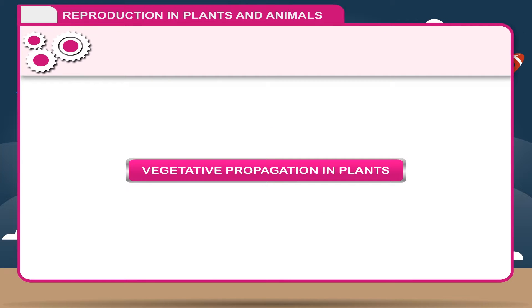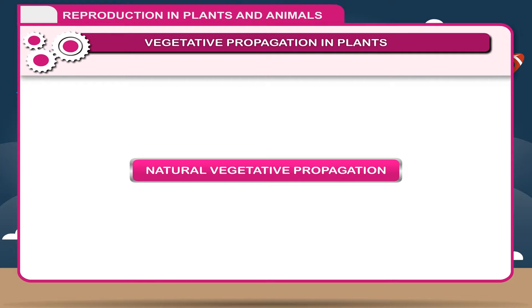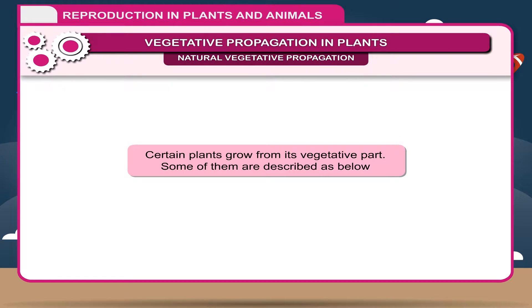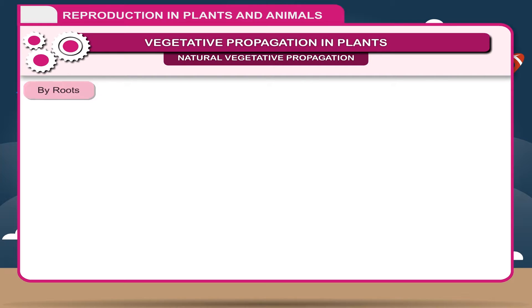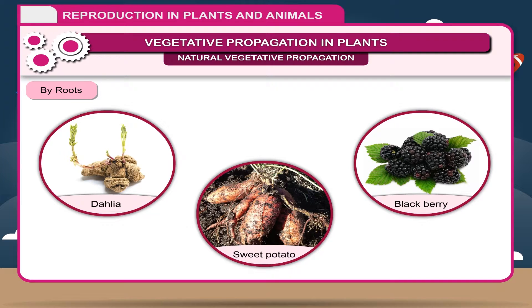Vegetative propagation in plants. In general, plants can be produced by vegetative propagation through several methods. Natural vegetative propagation: certain plants grow from their vegetative parts. By roots: in general, roots do not have the capacity for regeneration, but dahlia, sweet potato, blackberry, etc. reproduce by roots. When the roots of such plants are buried into soil, a new plant arises.